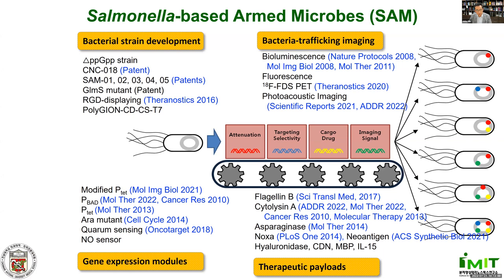After Sam's death, I named my engineered bacteria SAM — Salmonella-based Armed Microbes. SAM's engineering was done in four ways. First, engineered strains were developed by genetic engineering for safety. Second, gene expression modules that can encode several cancer drugs were engineered. Third, many cancer molecules were employed and evaluated, such as Flagellin B, Cytolysin A, and Asparaginase. Along with all this work, great efforts were made on developing imaging assays for visualization of bacteria using bioluminescence, fluorescence, PET, and photoacoustic imaging.